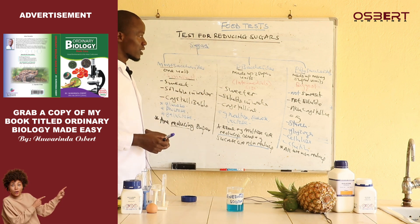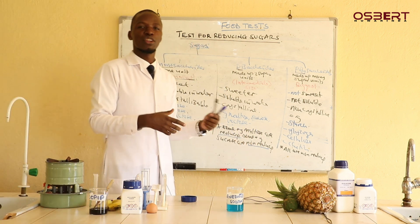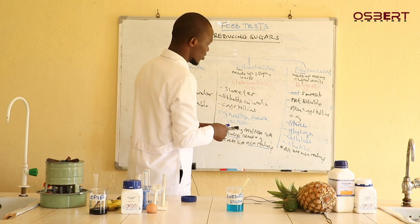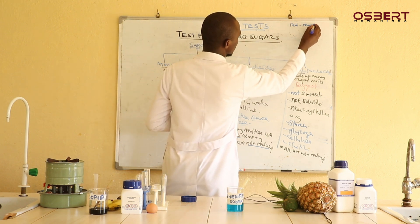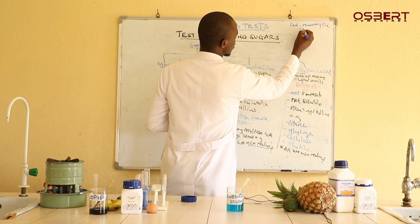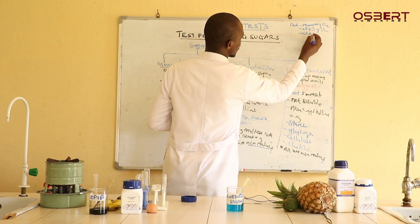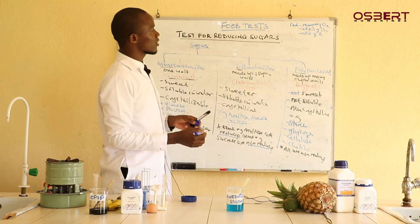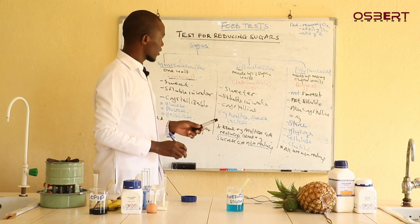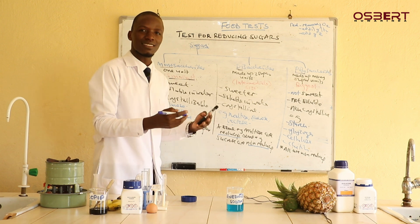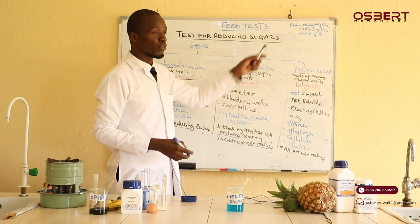Now, why are they called reducing? Borrowing knowledge from chemistry — reducing means removal of oxygen, addition of hydrogen, or addition of electrons. Any of those three statements describes reduction. So for a sugar to be called a reducing sugar, when you look at its chemical nature and it reacts with Benedict's solution, it must be doing one of these things.